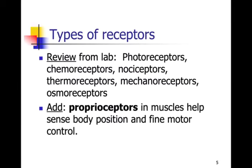Proprioceptors are the new receptor we introduced last week, and these are throughout your muscles. They allow you to have fine motor control, and they also help you to know your body position — where is your arm, what position is your leg in, where is your foot right now? Coordinating all the parts of your body together so that you have control over it and you know where it is.